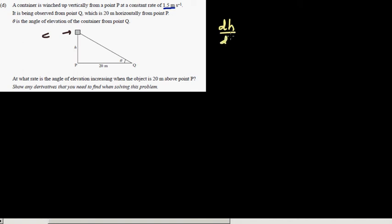A container is winched up vertically from a point P at a constant rate of 1.5 meters per second. So dh/dt is given to be 1.5 meters per second. The container C is lifted, and it is being observed from point Q, which is 20 meters horizontal from P. Theta is the angle of elevation of the container from point Q.